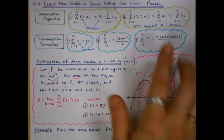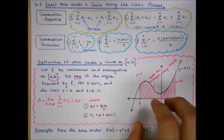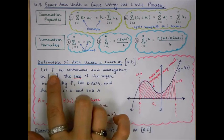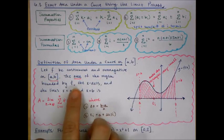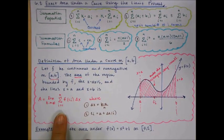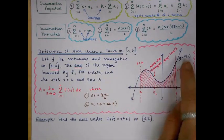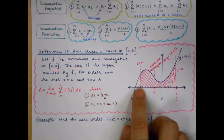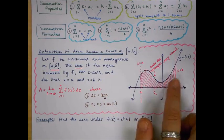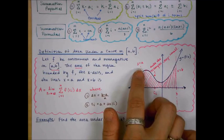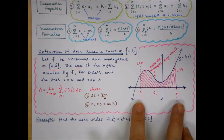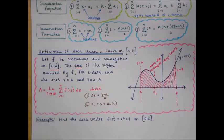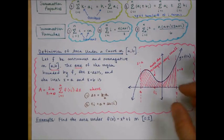The exact area under a curve on the interval [a, b] for any continuous and non-negative function is given by a specific formula. The function must be non-negative — meaning it could be zero, so it could touch the x-axis, but otherwise it has to be positive. It's bounded by the curve, the x-axis, and the boundary lines x equals a and x equals b. To get the exact area, we take our approximation rectangles and make them very, very small.